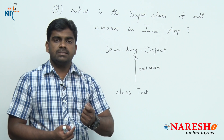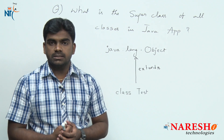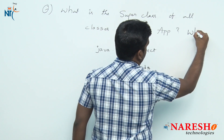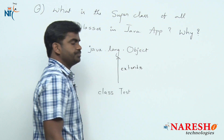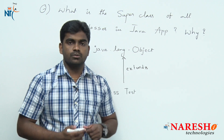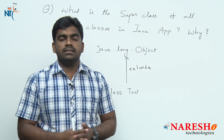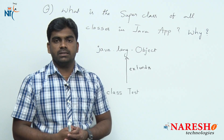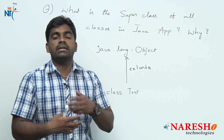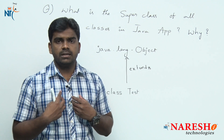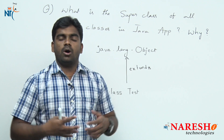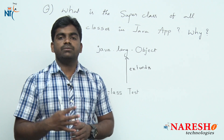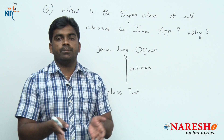Why is every class a subclass of the Object class? The reason is: in object-oriented programming, or in an object-oriented application, we are implementing and defining objects for communication. Generally, how real-world objects communicate — in the same way, in the virtual world, that is the application world, we also need to define objects to communicate.